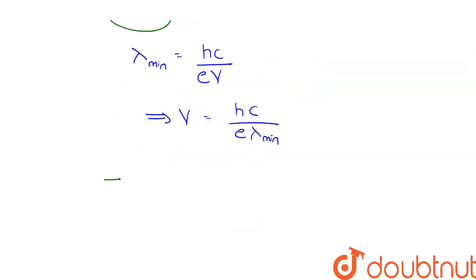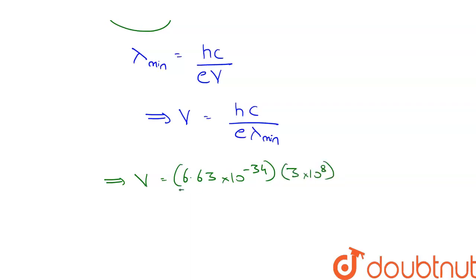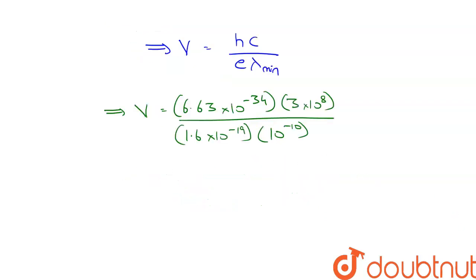Inserting the values: V = (6.63 × 10⁻³⁴ × 3 × 10⁸) / (1.6 × 10⁻¹⁹ × 10⁻¹⁰). Upon calculation, we get the potential difference V equal to 12.4 kV.